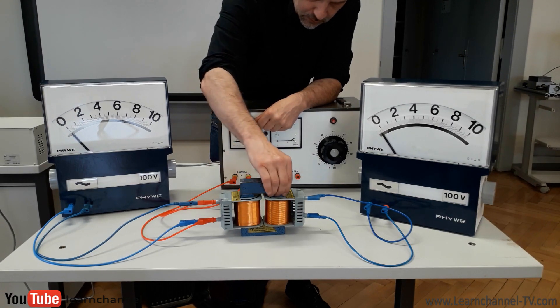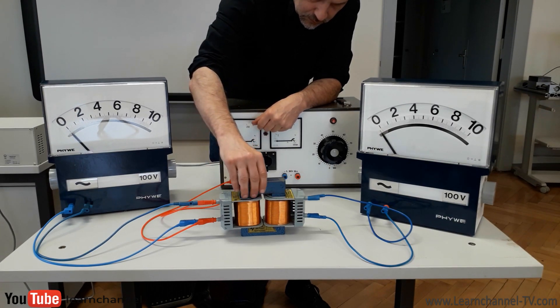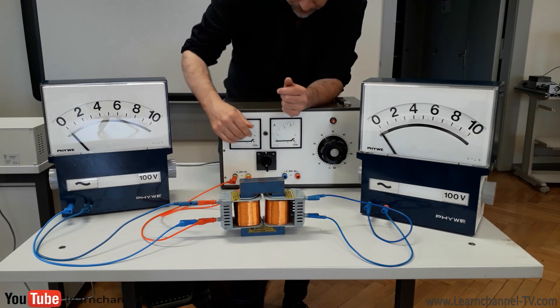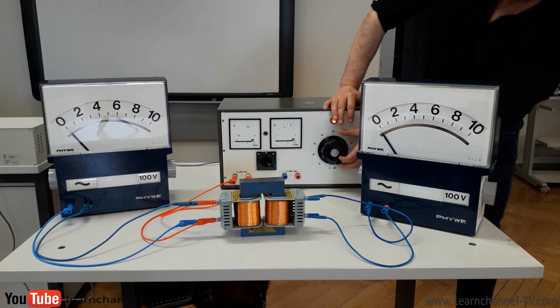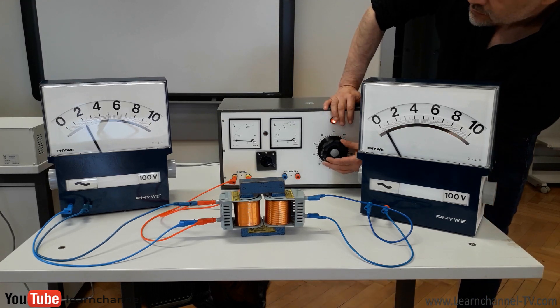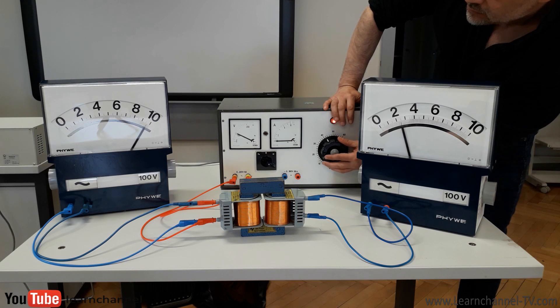As soon as we connect the input winding to voltage, a magnetic flux is built within the soft iron core, as we already know. And now we see that this magnetic flux is strong enough to keep the iron core together and to hold the whole weight of the transformer.